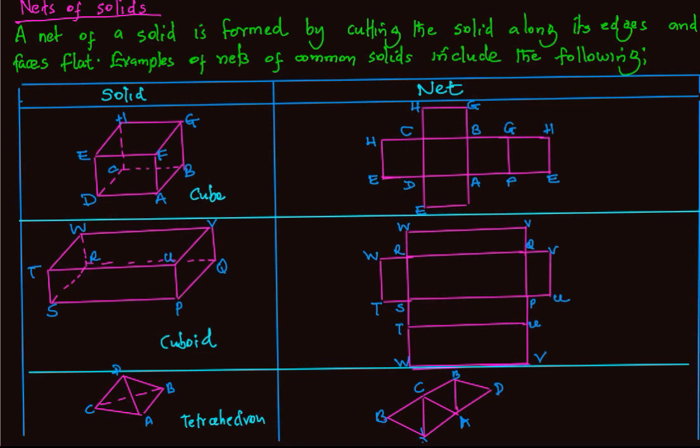For a cuboid, we also get its net which shall be six rectangles unless it has a square cross section. If it has a square cross section, then its net will be made of four rectangles and two squares. But if it has a rectangular cross section, then its net will have six rectangles.